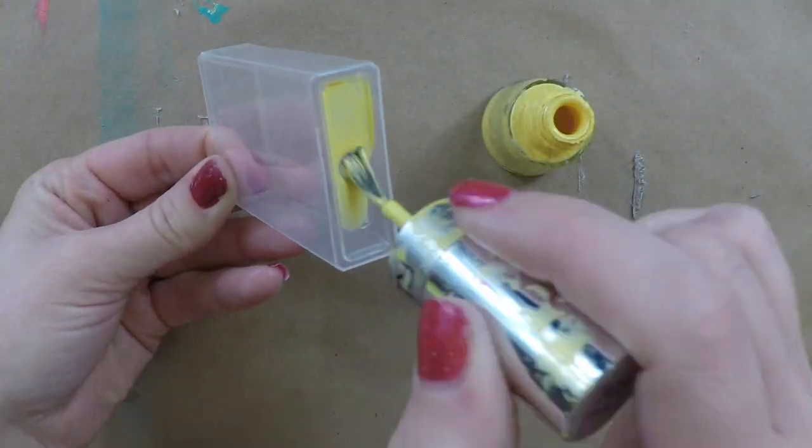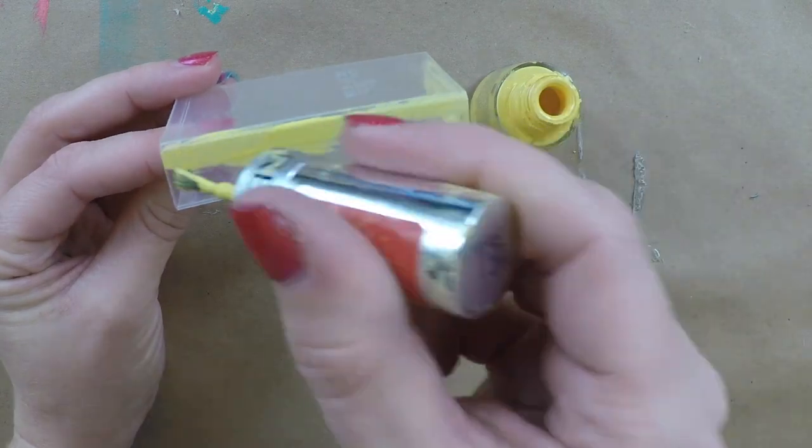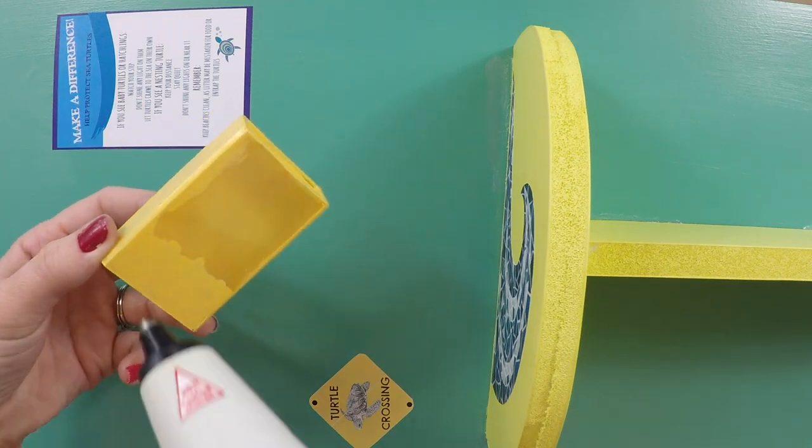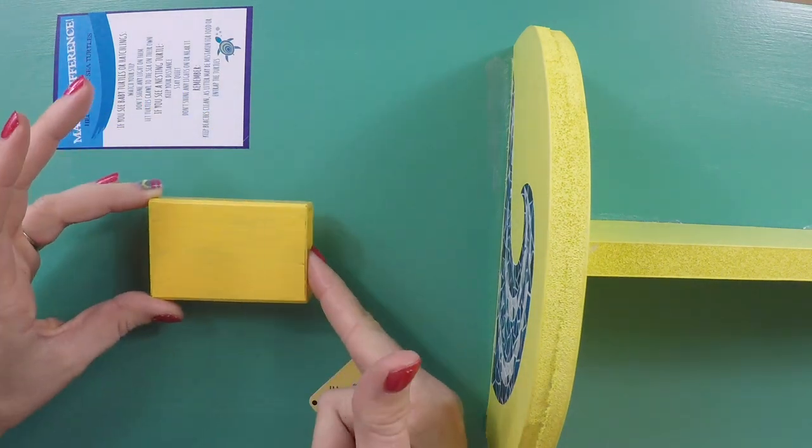Now you can add your printables to the outside wall. For the brochure basket, just take a tic-tac container, paint it yellow, or the color of your choice, and then hot glue it to the wall. Now the outside of your wall is complete.